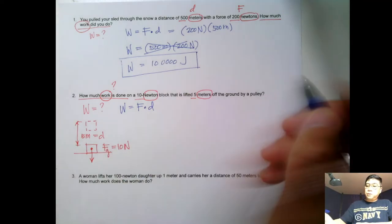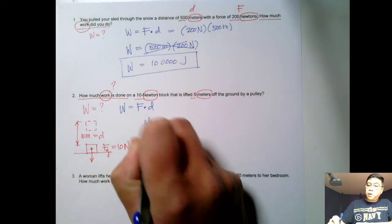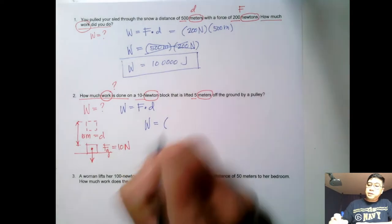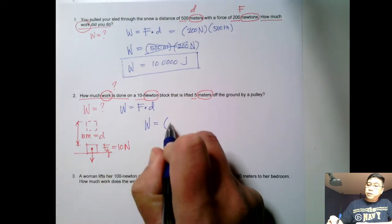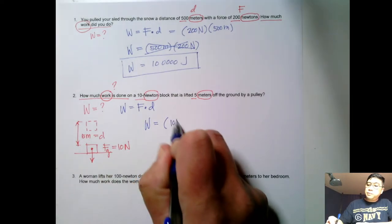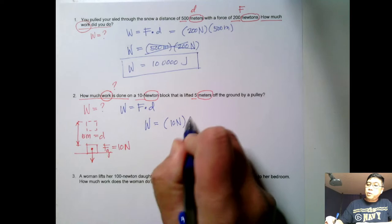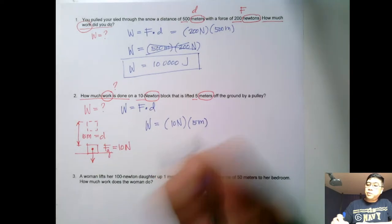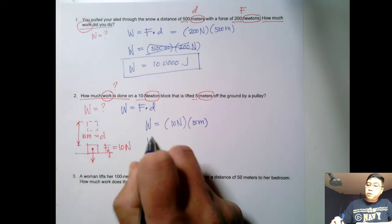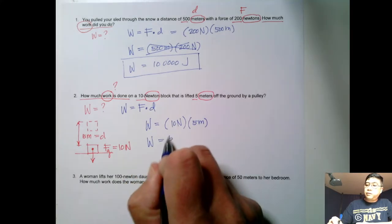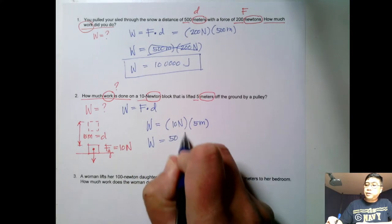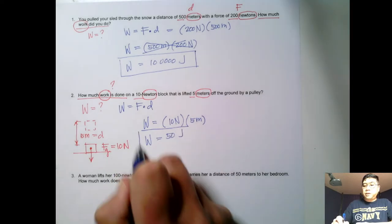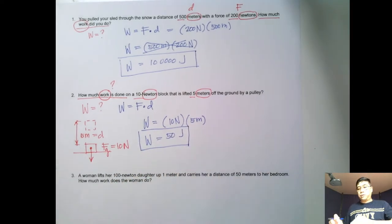The unit of force is newtons, so we have 10 newtons multiplied by the distance of 5 meters. Our work is therefore 50 joules. That is the answer to example question number two.